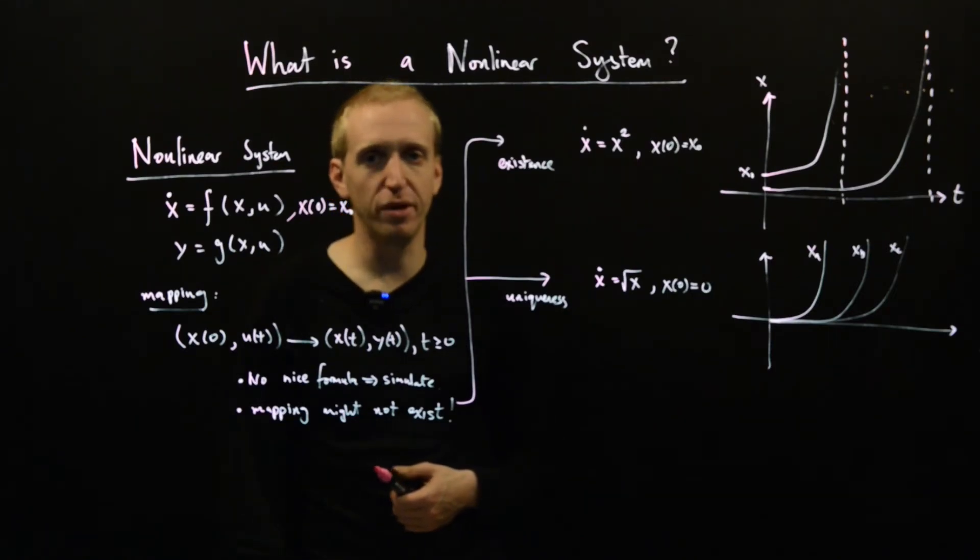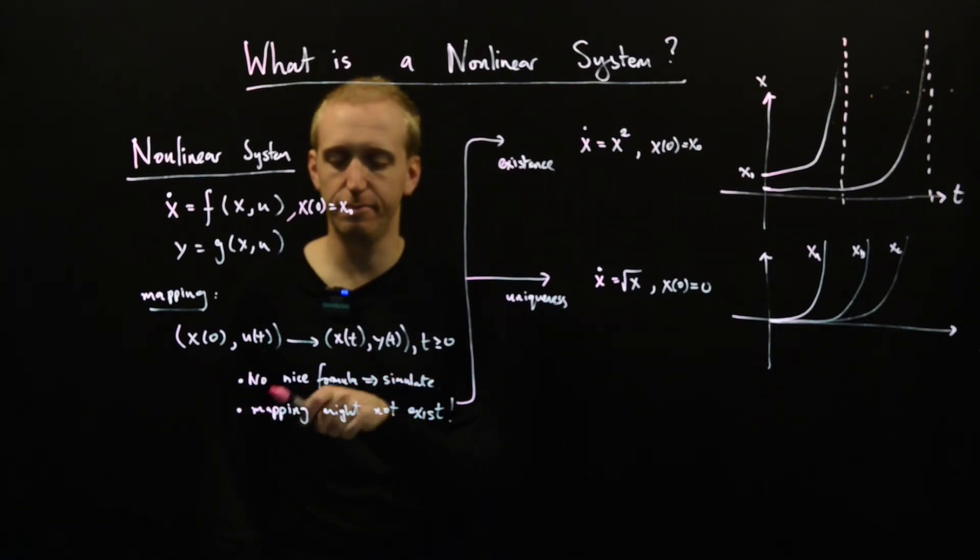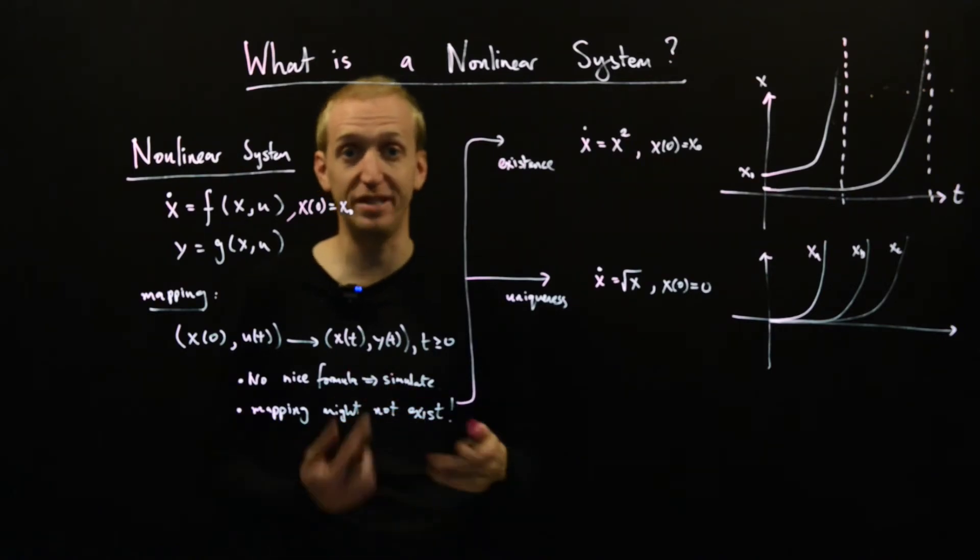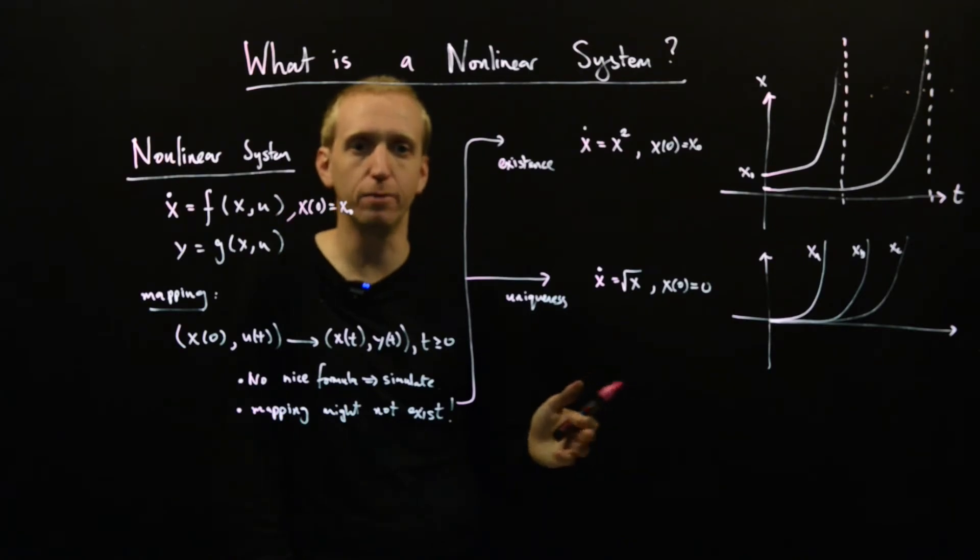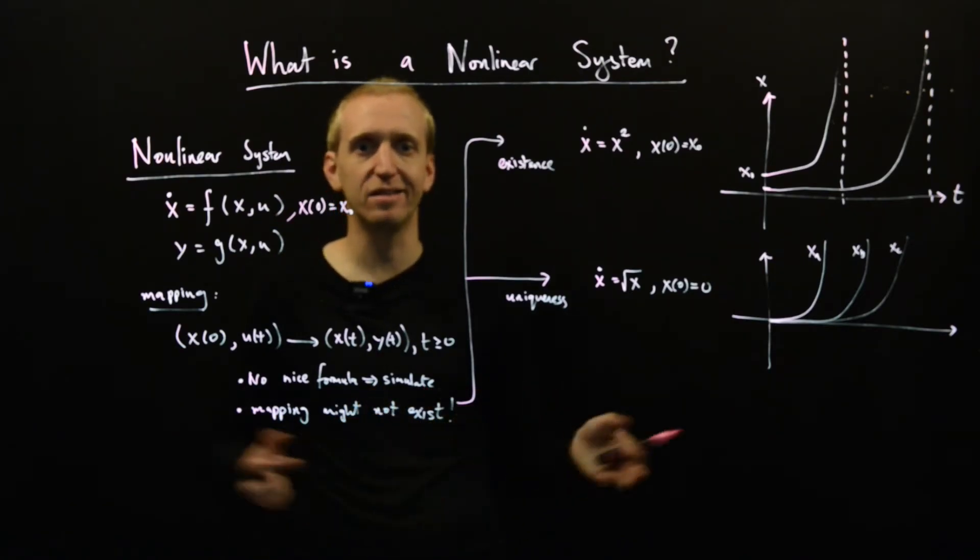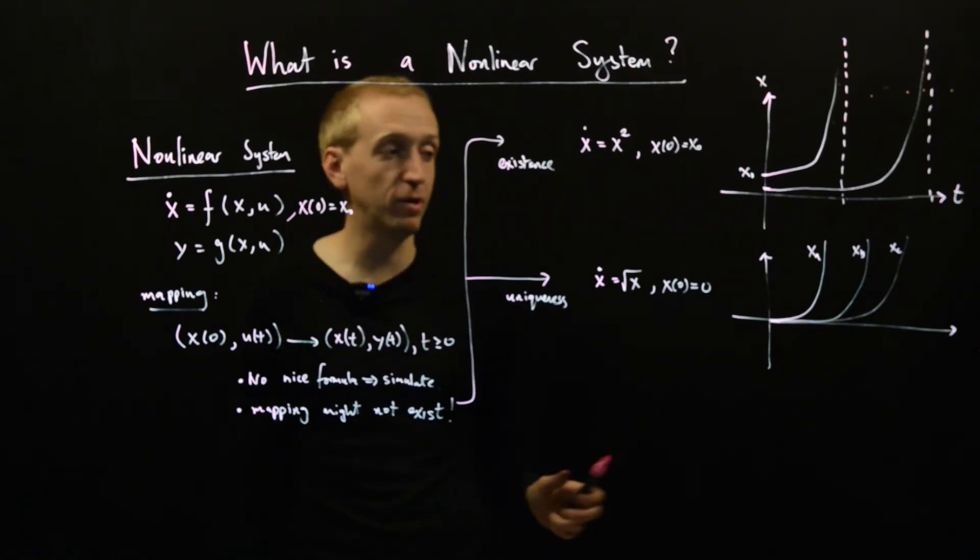So that all seems rather bad. I mean, okay, I told you we shouldn't worry about this mapping not existing - it will never happen in practice. But these differential equations they look quite simple, and if something so simple can lead to such problems, how can we be sure that we're not going to run into any?